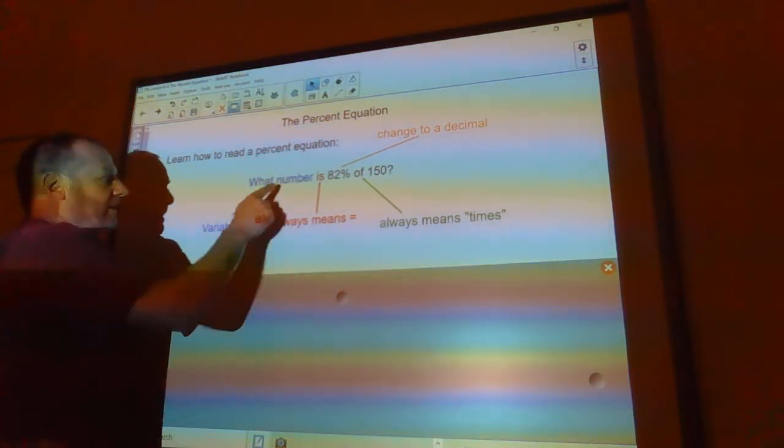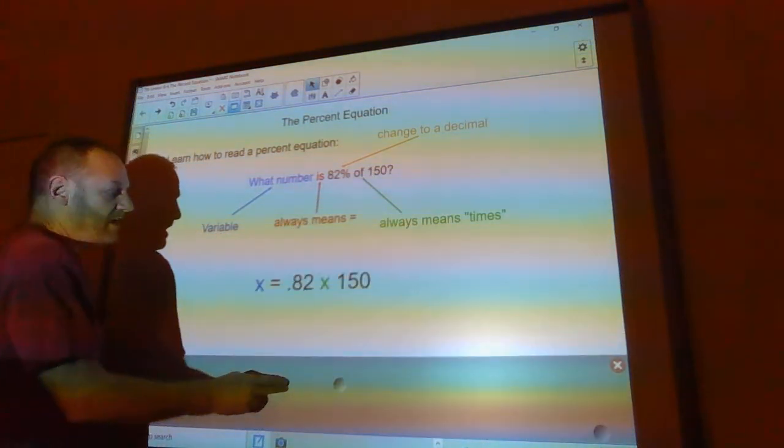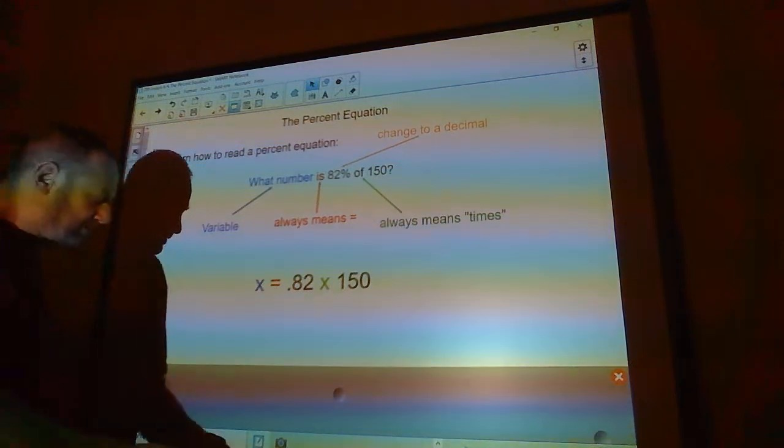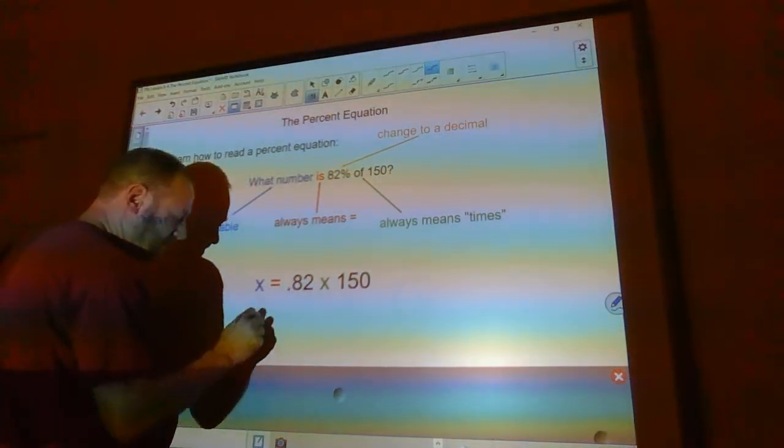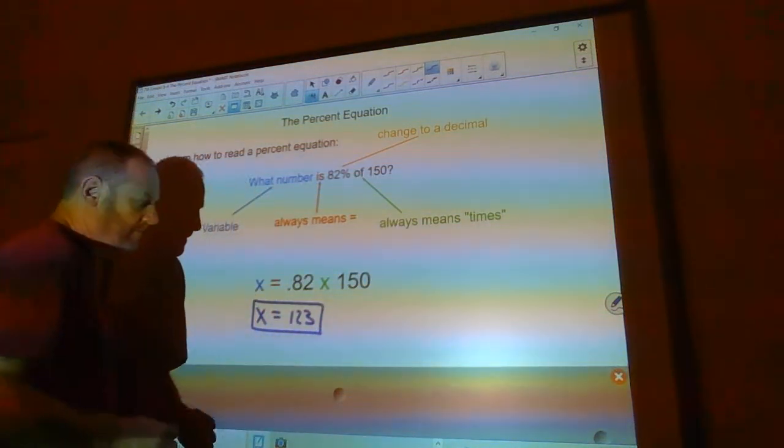So, if I write this out, x equals 0.82 times 150. I get this right here. So, at this point, I just get out my handy-dandy TI-84 Plus C Silver Edition graphing calculator. And I multiply that out and I get 123. x equals 123.